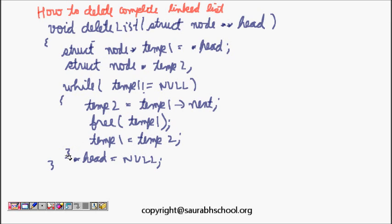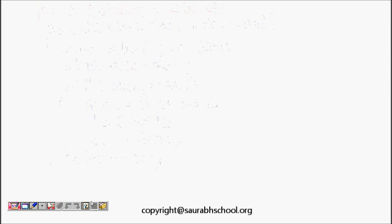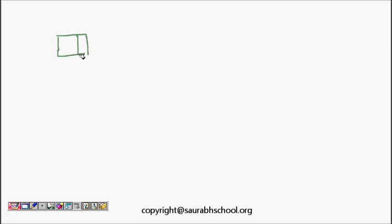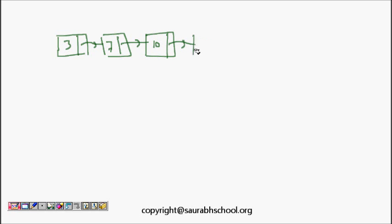Let's first try to understand it using a pictorial diagram. Let's make a small linked list — say 3, 7, 10, 15. So I have a linked list of length 4, and now I want to delete the complete linked list.